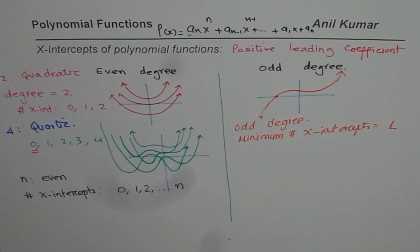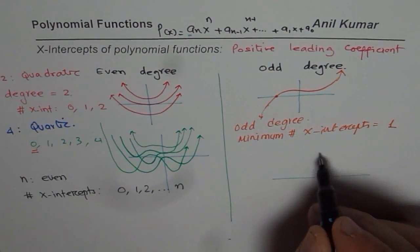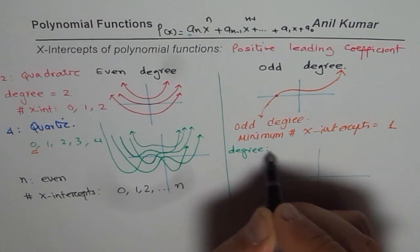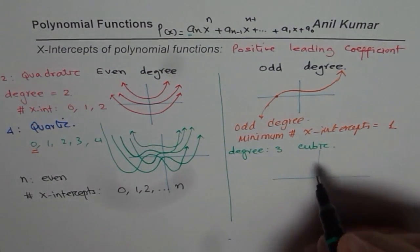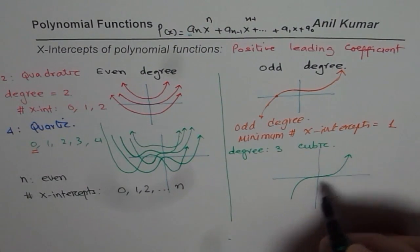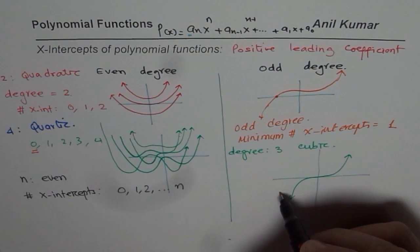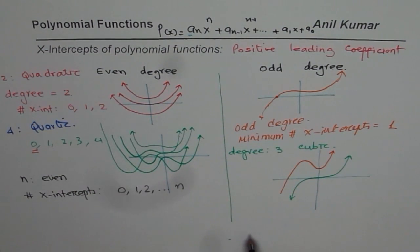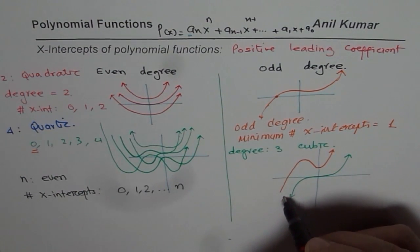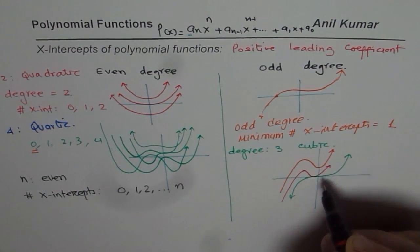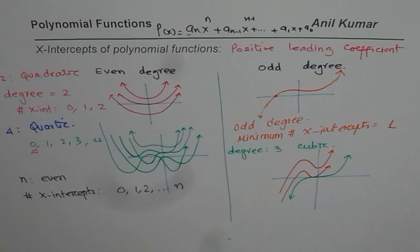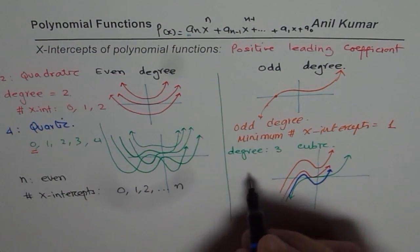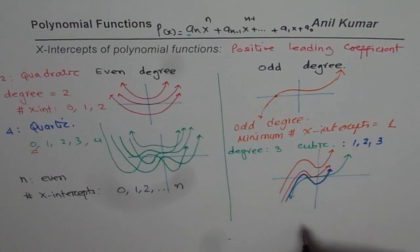The question is: what is the maximum number? Let us say a polynomial is of degree 3 — a cubic polynomial. Taking simple examples: x-cubed has one x-intercept. If I pull the curve down slightly, we could get two roots. If I pull it further down, the function could have three real roots. So the number of x-intercepts for a degree-3 polynomial will be 1, 2, or 3.